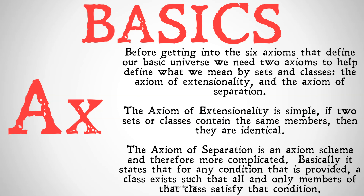Before getting into the six axioms that define our basic universe, we need two axioms to help define what we mean by sets and classes: the axiom of extensionality and the axiom of separation. The axiom of extensionality is quite simple — if two sets or classes contain the same members, then they are identical. The axiom of separation is an axiom schema and therefore a little bit more complicated. Basically, it states that for any condition that is provided, a class exists such that all and only members of that class satisfy that condition. Check out our videos on these for more.